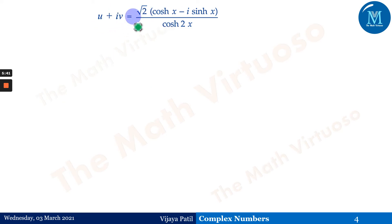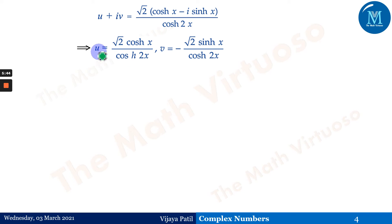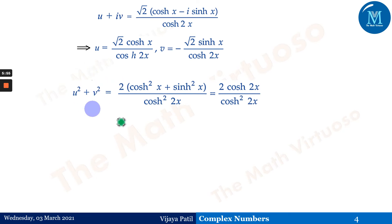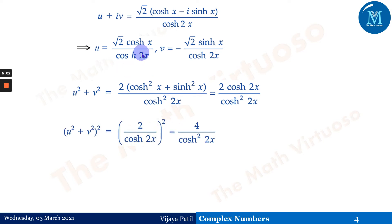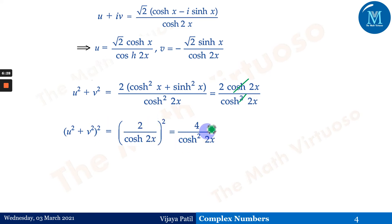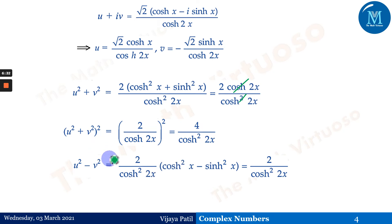After rationalization, u + iv equals √2·[cosh(x) - i·sinh(x)] / cosh(2x). Separating parts: u = √2·cosh(x)/cosh(2x) and v = -√2·sinh(x)/cosh(2x). Then u² + v² = 2·[cosh²(x) + sinh²(x)]/cosh²(2x) = 2·cosh(2x)/cosh²(2x) = 2/cosh(2x), since cosh²(x) + sinh²(x) = cosh(2x).